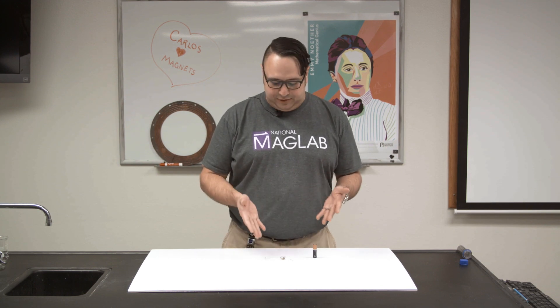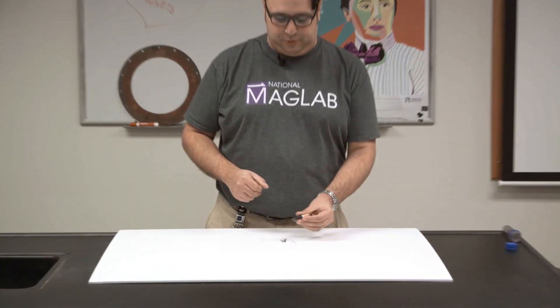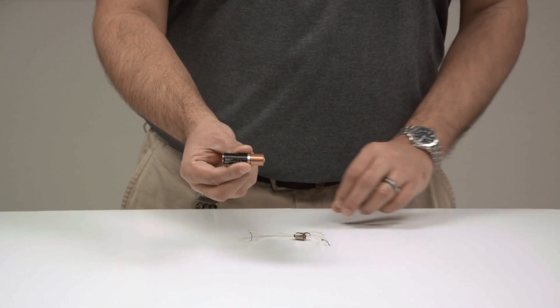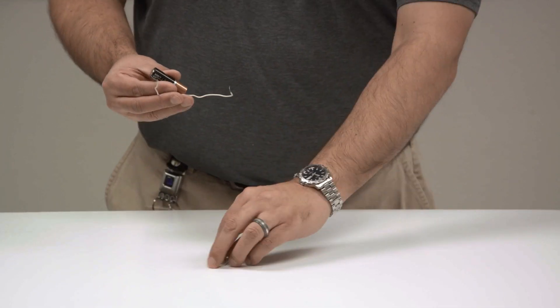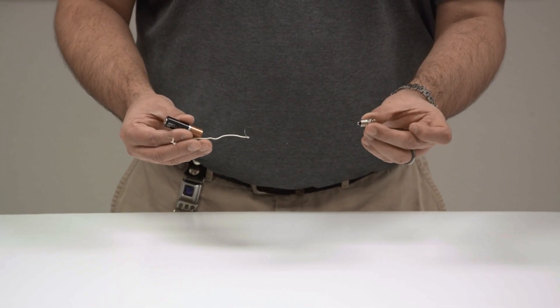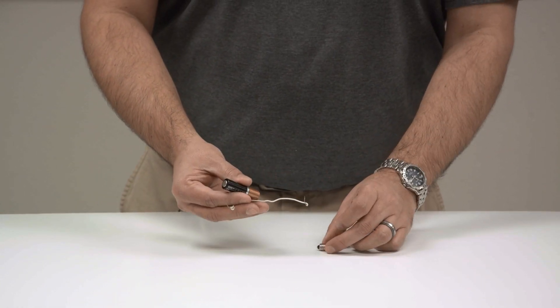DC stands for direct current, and I've got a little DC circuit here to demonstrate how that works. We've got a power source, something to carry the electricity, and then I've got this small light bulb that will turn on as the electricity goes through that circuit.